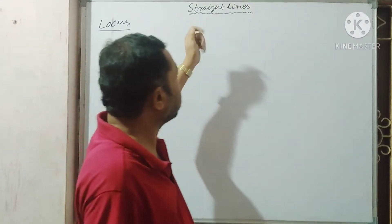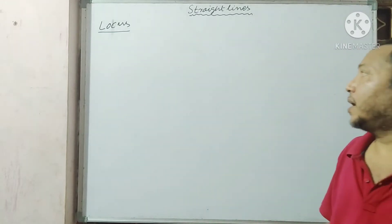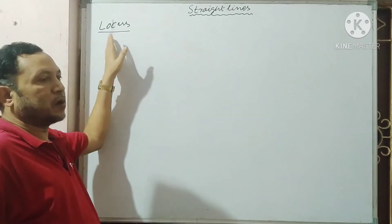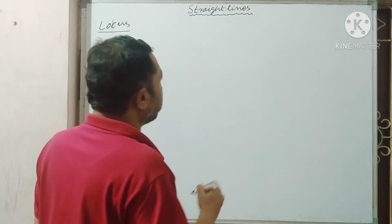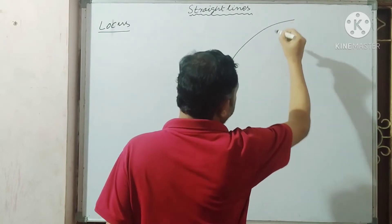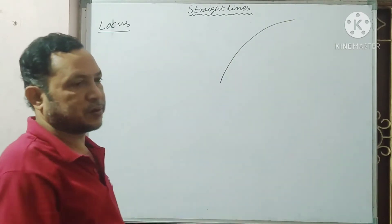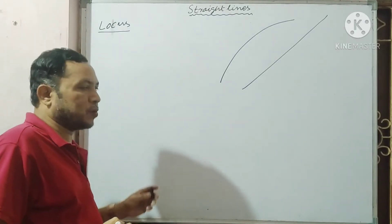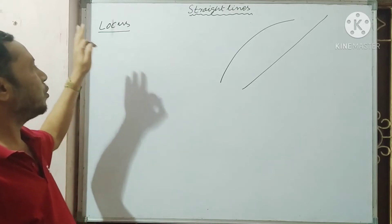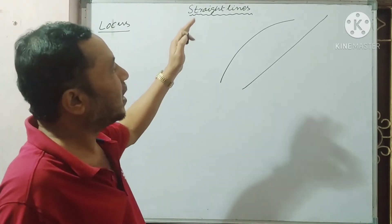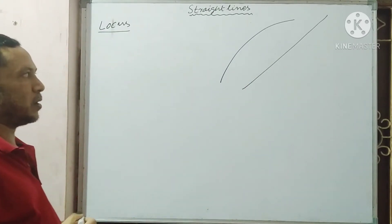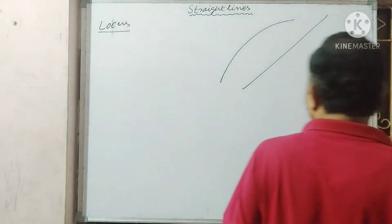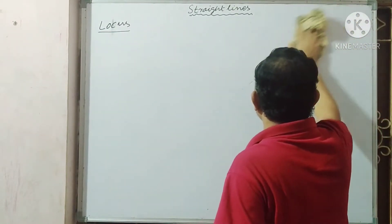Dear students, today we shall start straight lines — the equation of straight lines, or locus of straight lines. Locus means the path of a point. Suppose a point moves along a path; that path is called the locus. If the path is a straight line, then it is called the equation of straight lines. So equation and locus are not two different things. Locus means the path followed by a point, given by an equation. We shall discuss various types of equations of straight lines.